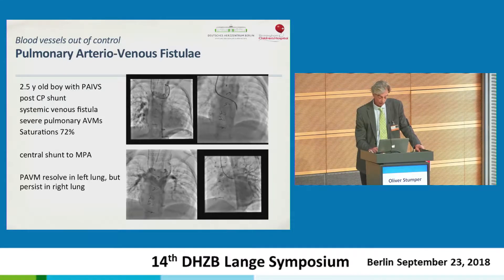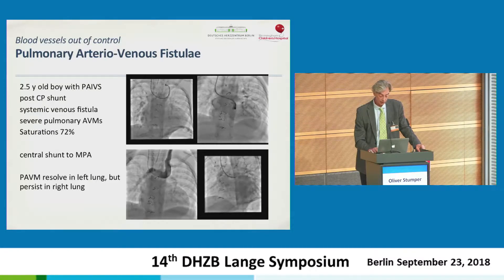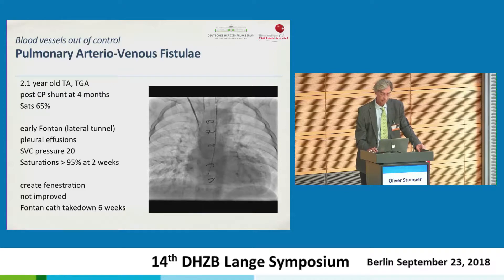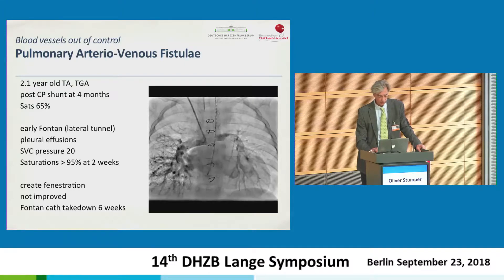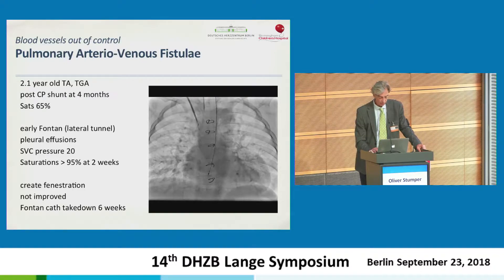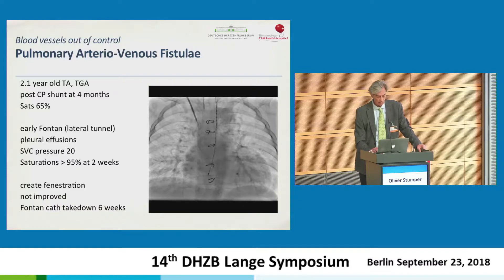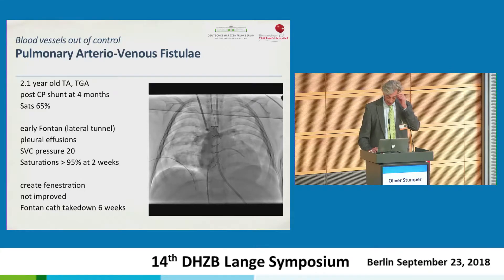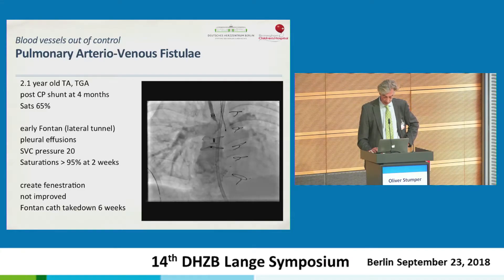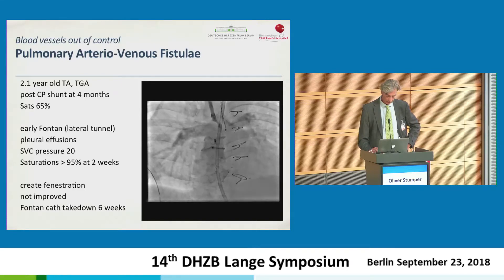There has been work done by Joseph Vertucatil in particular, and it is now believed that it's one of these micro-RNAs which is the hepatic factor — what the French call 'antifistaly.' A final example: a two-year-old boy, tricuspid atresia with transposition, who had a CP shunt and developed severe AVMs in the right lung. We went for an early Fontan — a lateral tunnel — complicated by pleural effusion and SVC pressure of 20. Saturations improved remarkably to 95% after two weeks. A fenestration was created; however, he did not improve and the Fontan was taken down trans-catheter, which gave him three years. Unfortunately, the pulmonary AVMs have now returned.